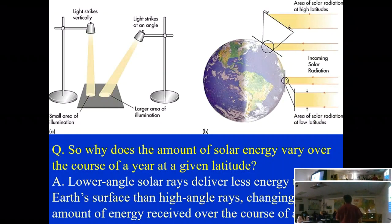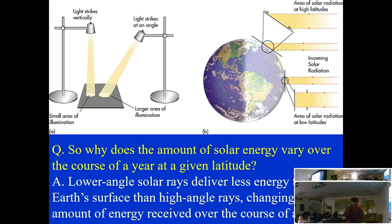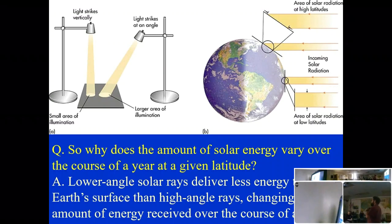Why does it get colder at higher latitudes? When the sun is directly overhead at a certain point, its rays hit at 90 degrees — that's the most direct sunlight and you absorb a lot of solar radiation. At the poles, that same beam of light is spread over a much larger area, so you're getting less radiation per square foot, which is why polar regions are generally colder.